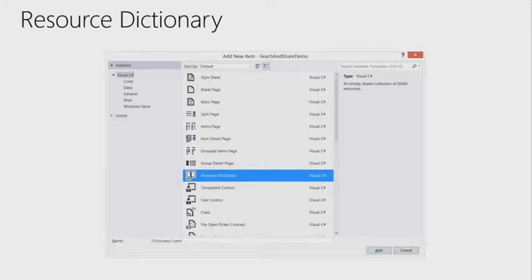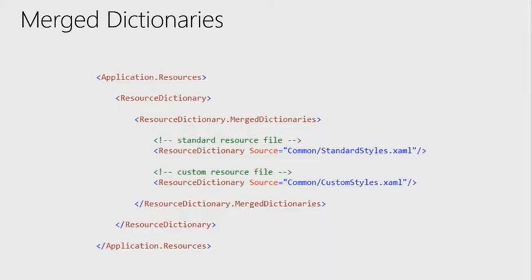To merge a resource dictionary into your application, go to your app.xaml — not the code-behind, but the actual XAML definition. Within application resources there is a resource dictionary entry. You can enter as a child the resource dictionary merged dictionaries as a collection property. One of the great things about XAML is if a property is a collection, it expects one or more elements within it. A merge dictionary is just a property on resource dictionary of type resource dictionary — just a collection. The first one is the standard one that comes out of the box, and you add your custom one.